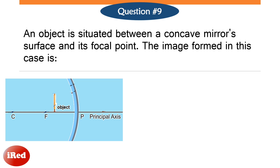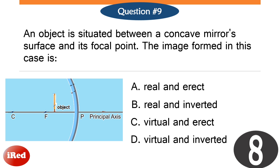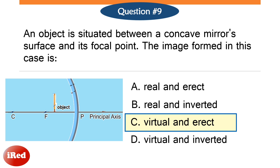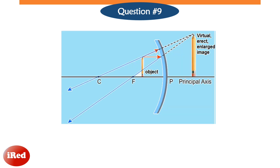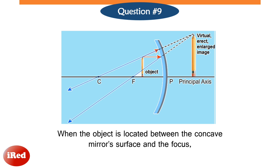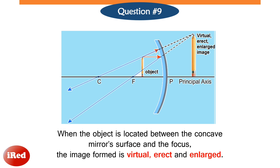Number nine: an object is situated between a concave mirror surface and its focal point — what is the image formed in this case? The correct answer is letter C: virtual and erect. When the object is located between the concave mirror surface and the focus, the image formed is virtual, erect, and enlarged.